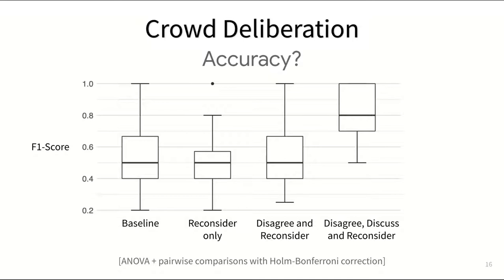Zooming in on just the objective task, we could measure the accuracy of worker labels by comparing against the expert-provided answer key. We found that deliberation increased label accuracy compared to several baselines without deliberation.